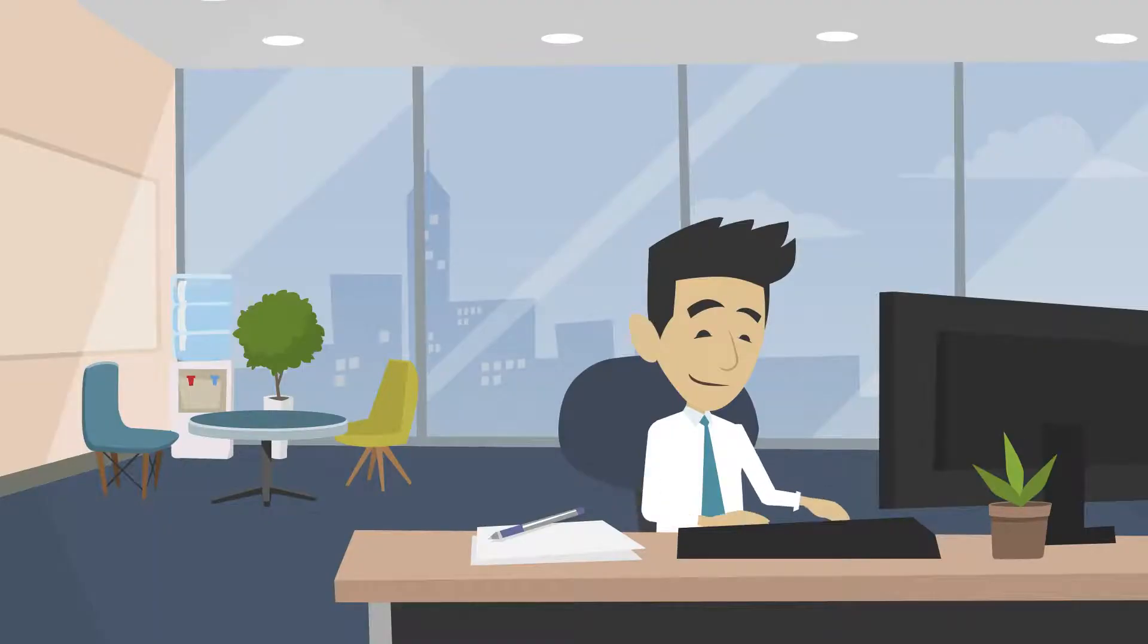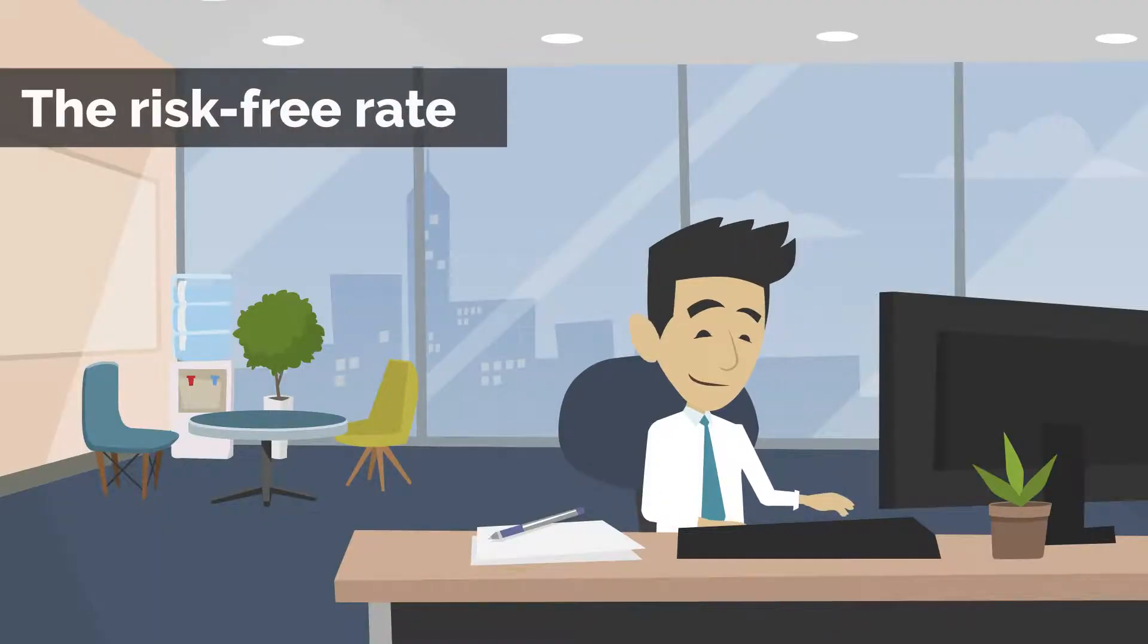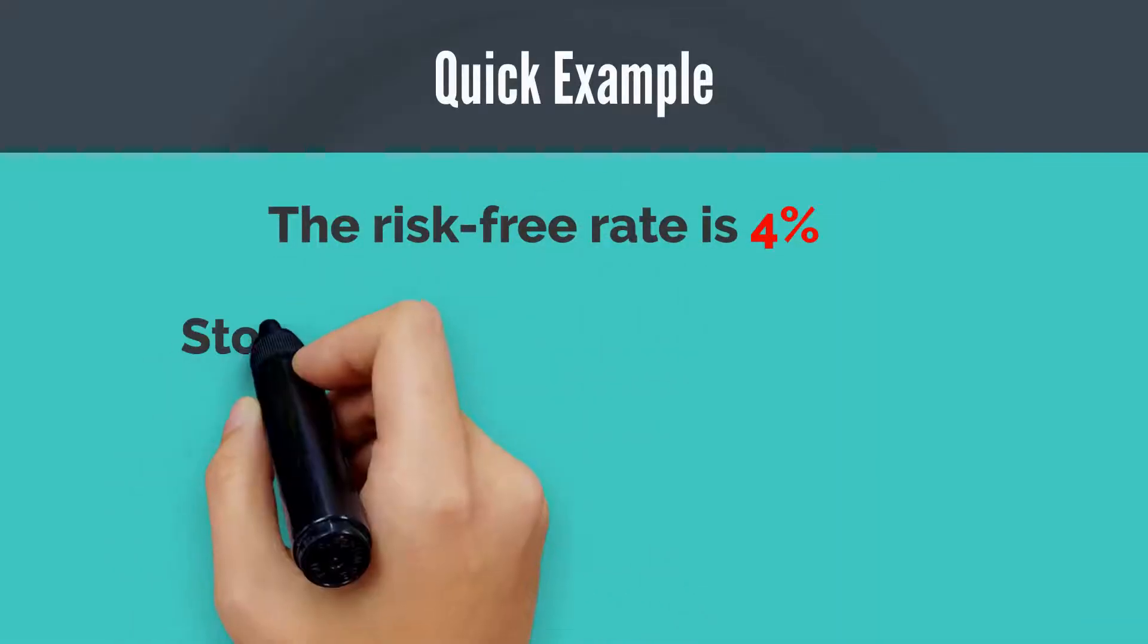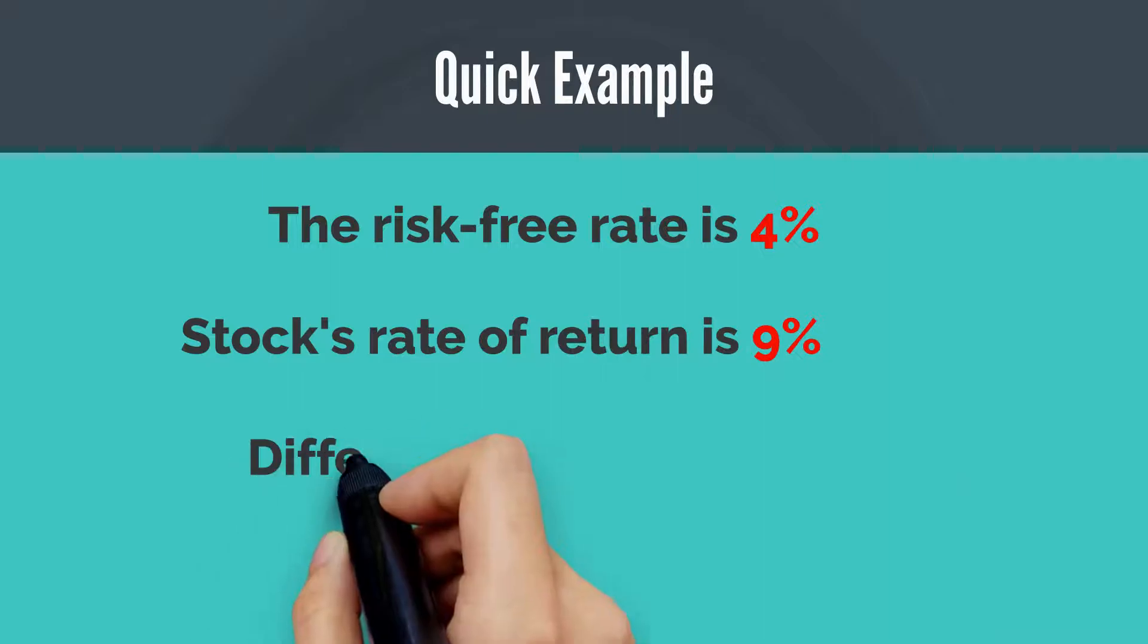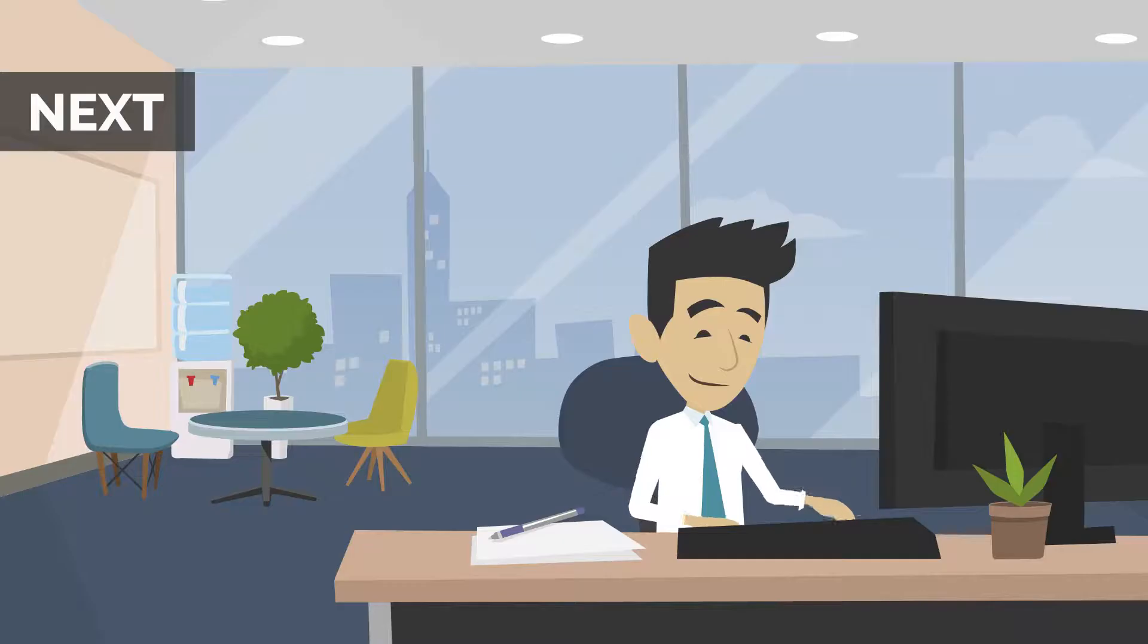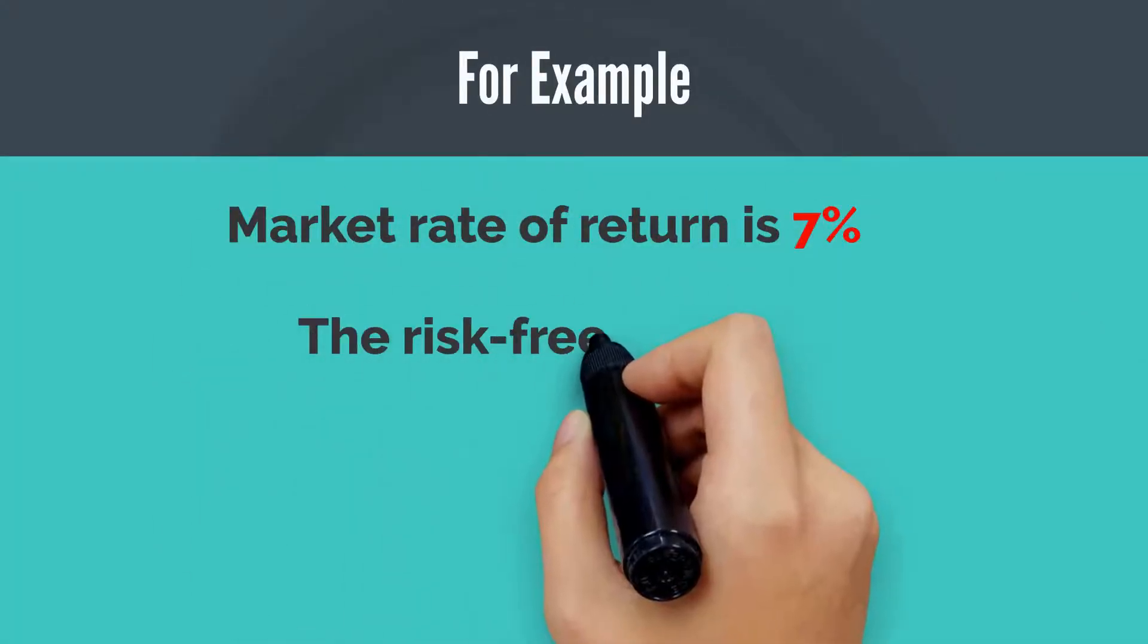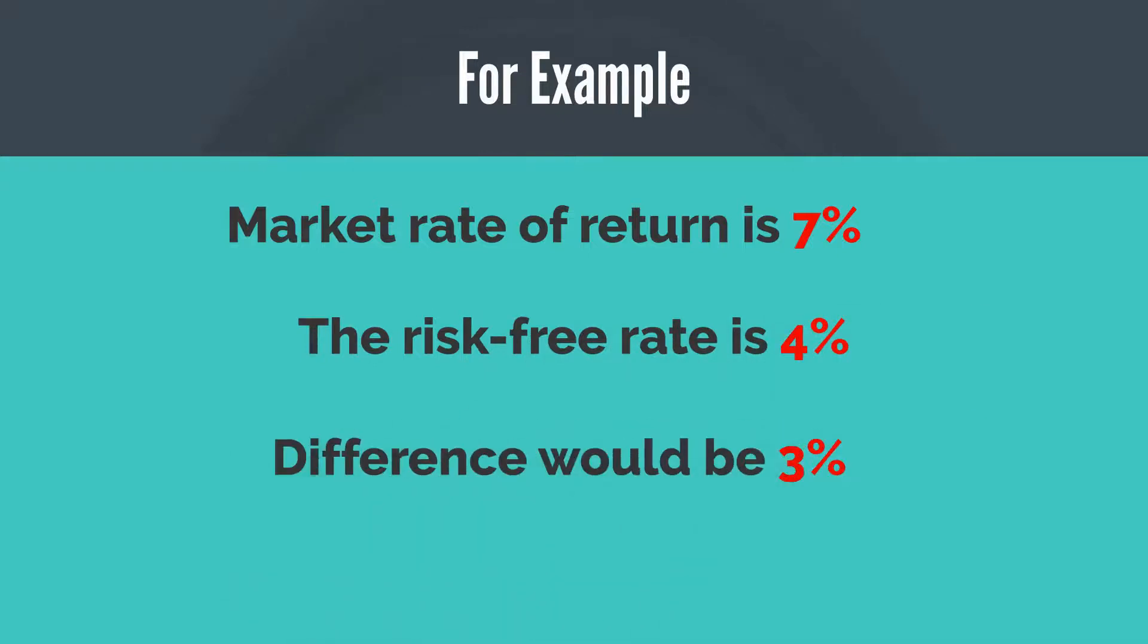After determining the rate of return, you should now subtract the risk rate from the stock's rate of return. Quick example, if the risk-free rate is 4% and the stock rate of return is 9%, the difference would be 5%. Next, you should subtract the risk-free rate from the market or index rate of return. For example, if the market rate of return is 7% and the risk-free rate is 4%, the difference is 3%.